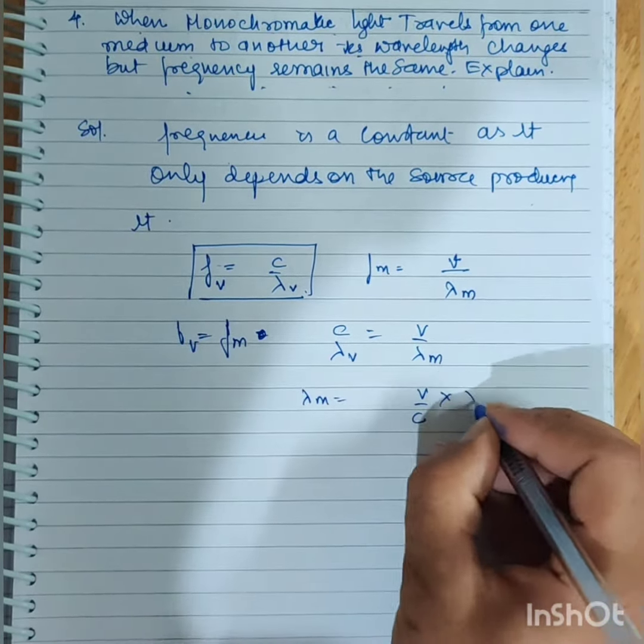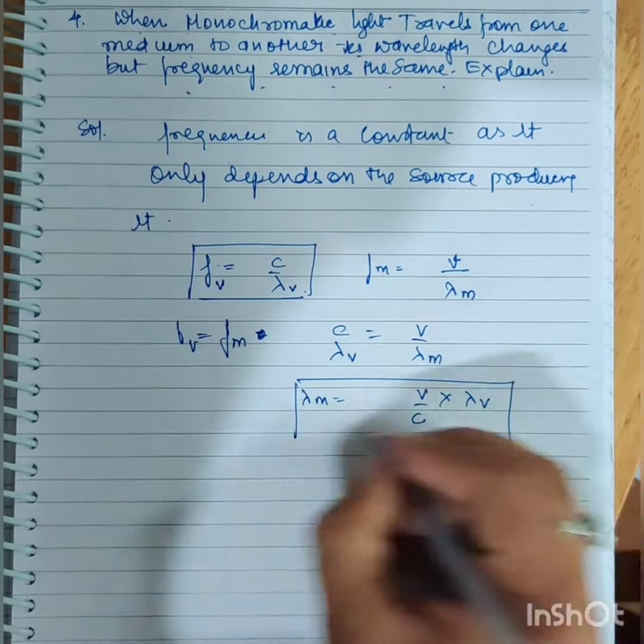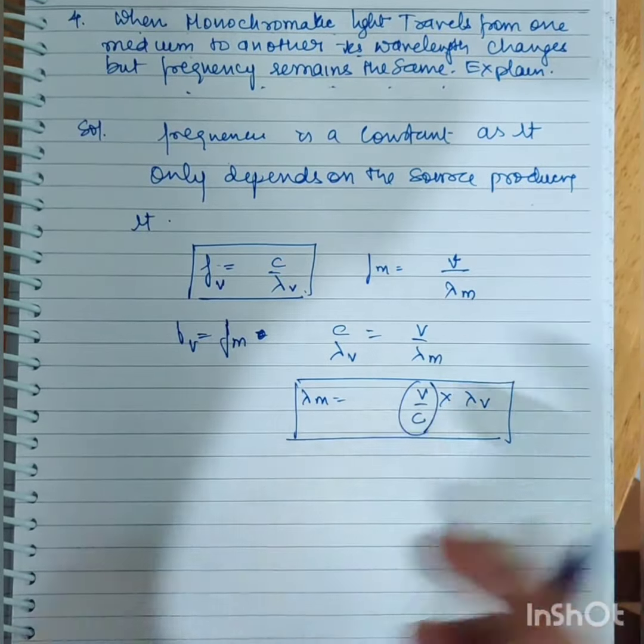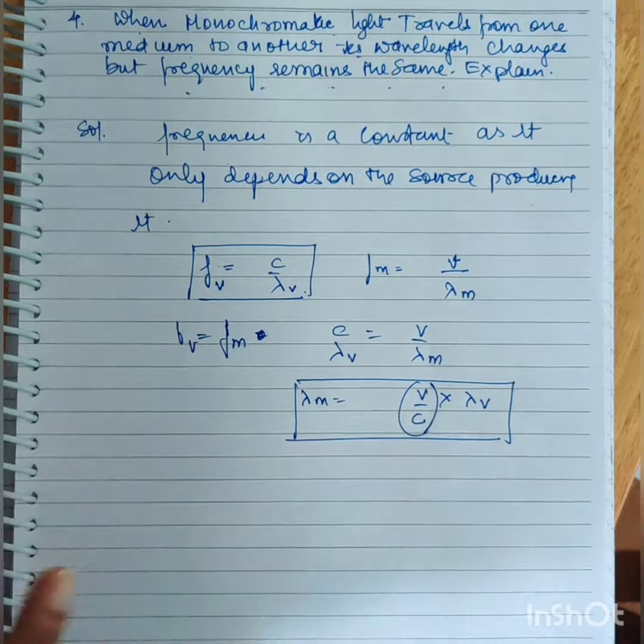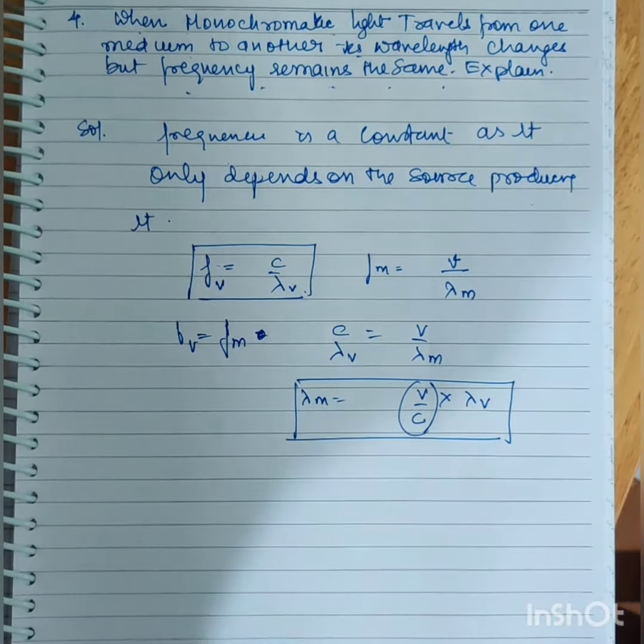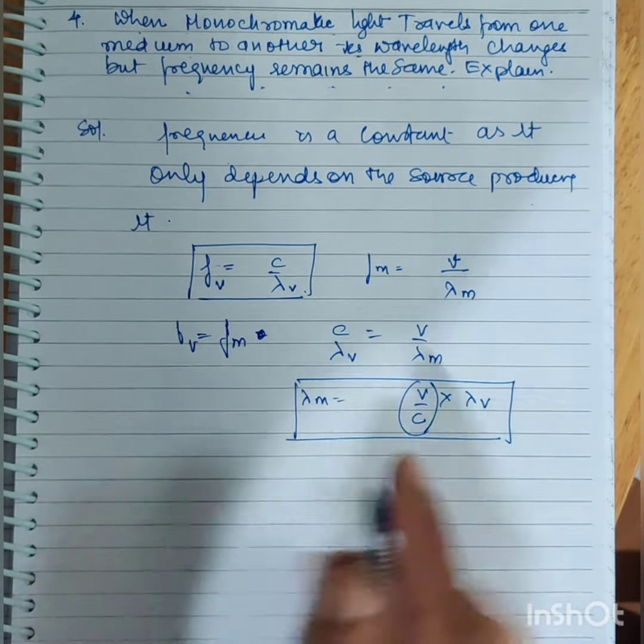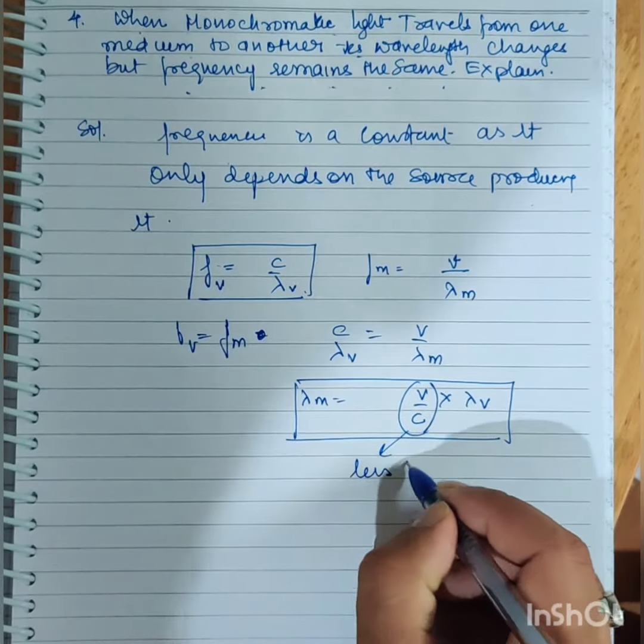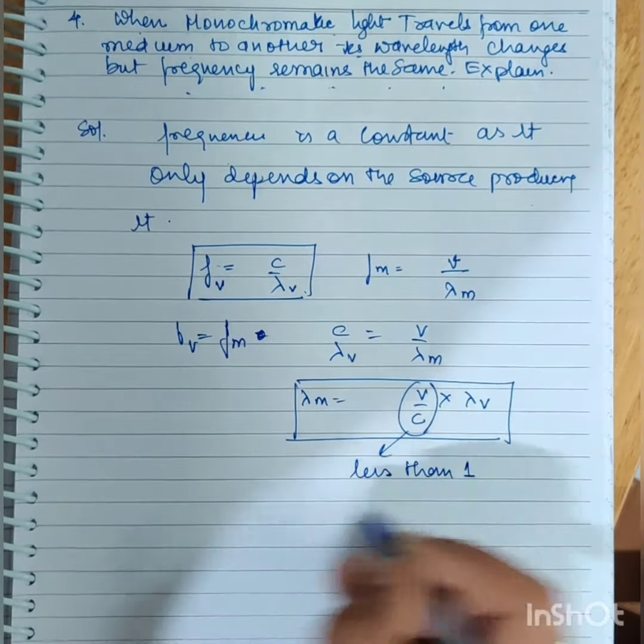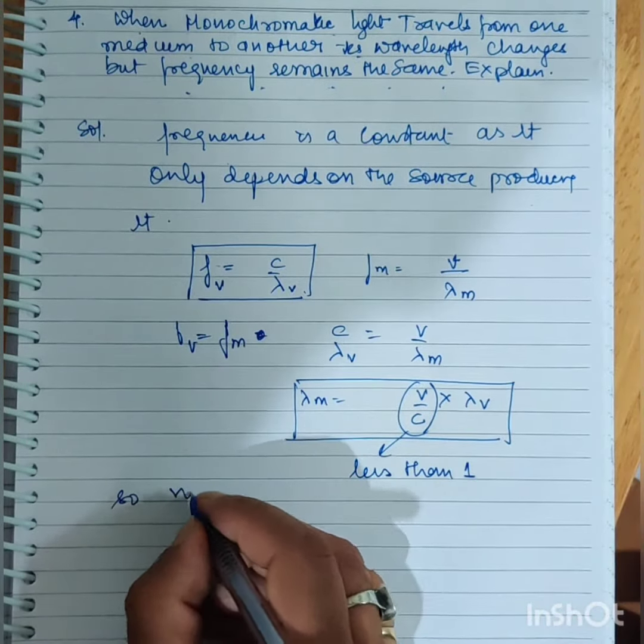Lambda m equals v by c into lambda vacuum. Now you can see v by c can never be equal to 1 in any other medium. The speed of light in any medium is not as much as in vacuum, so this number will be less than one. So wavelength decreases.